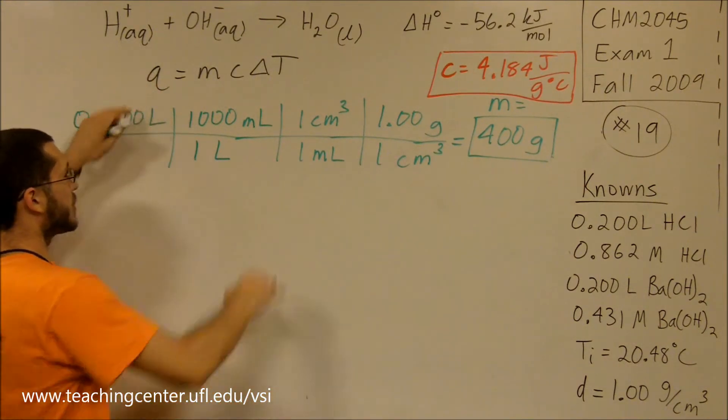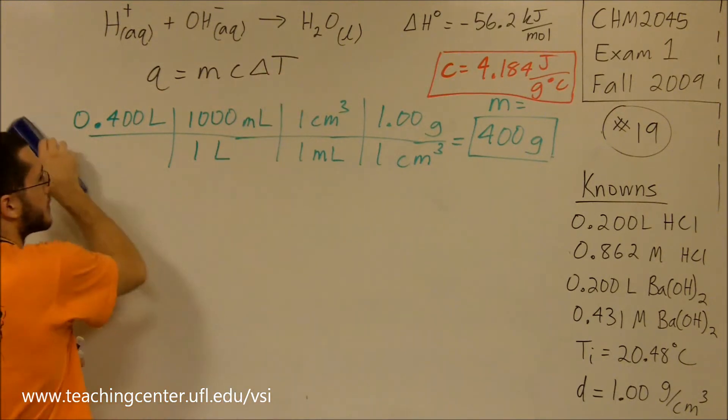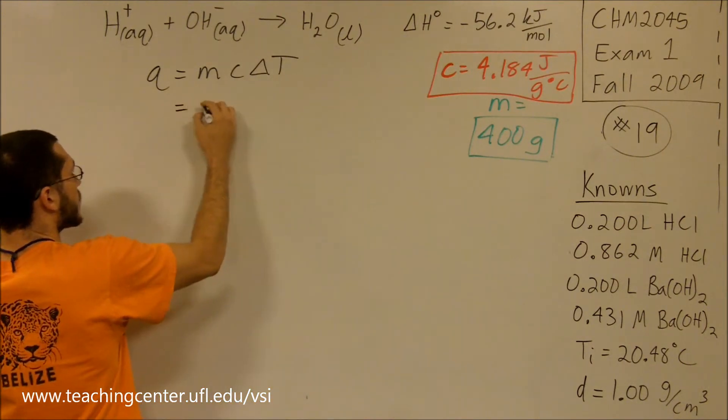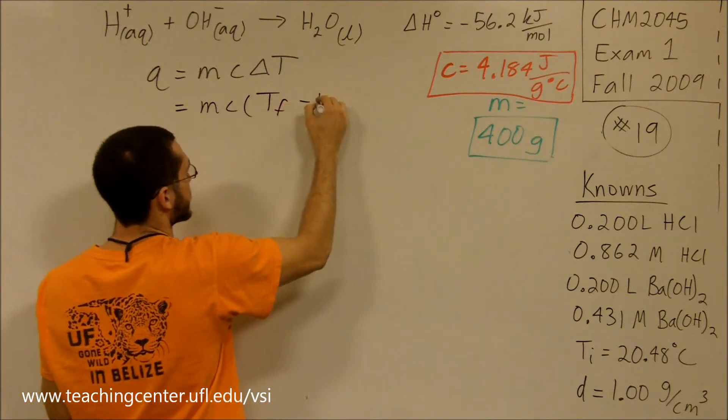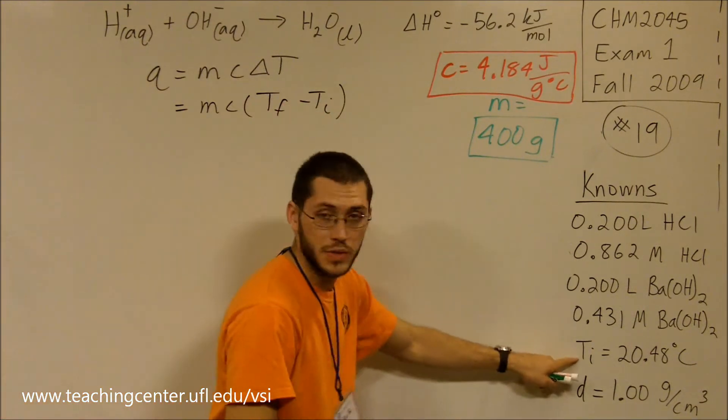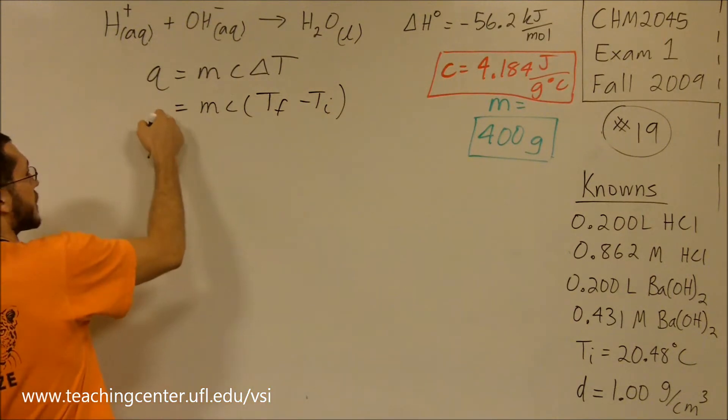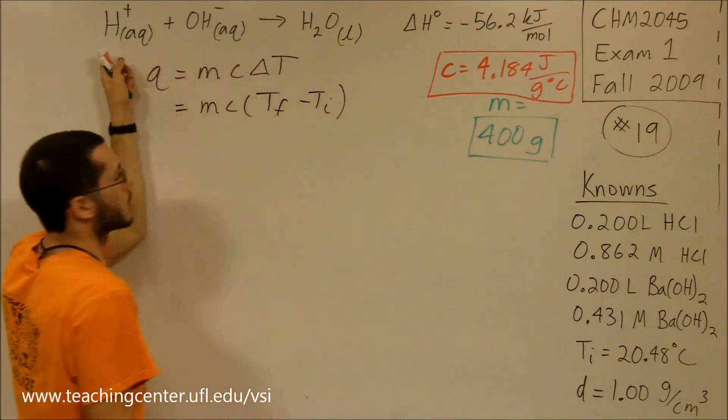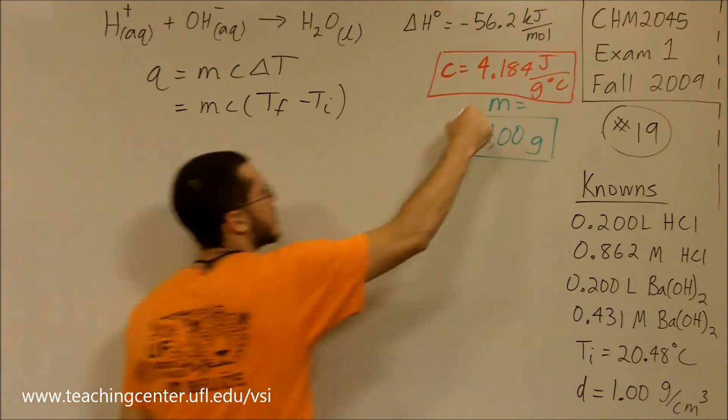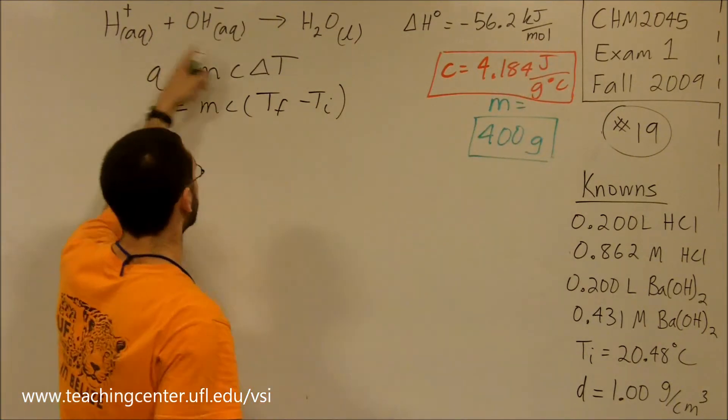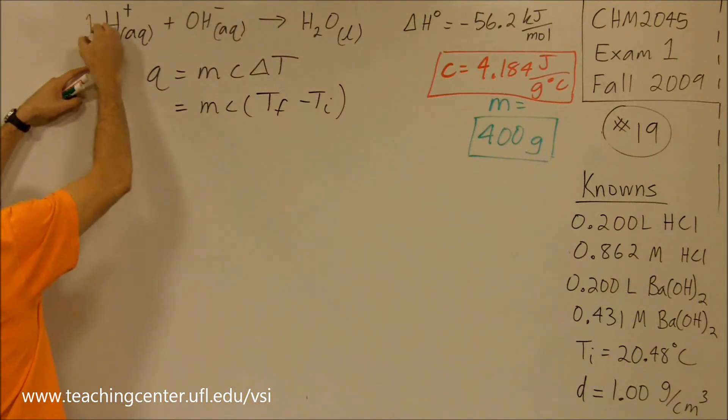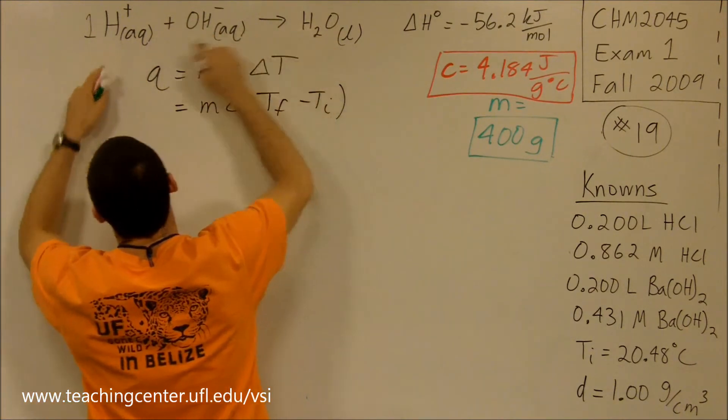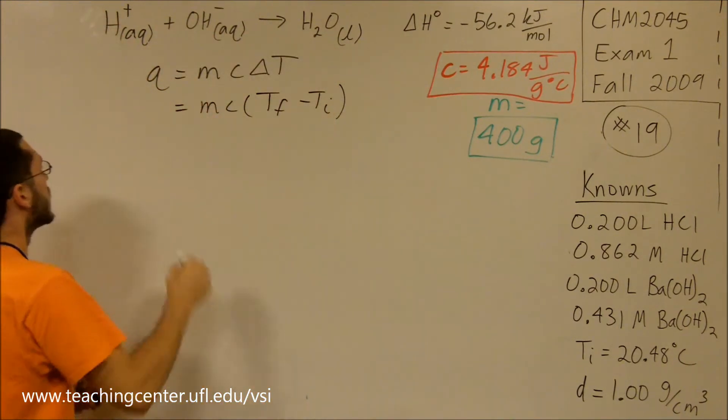Now we need Q and we need delta T. Delta T is essentially what we're looking for. Let's break down delta T into T_f minus T_i. We know the temperature initial. Do we know the heat released? It's not going to be minus 56.2 because we don't necessarily have just one mole of H⁺.